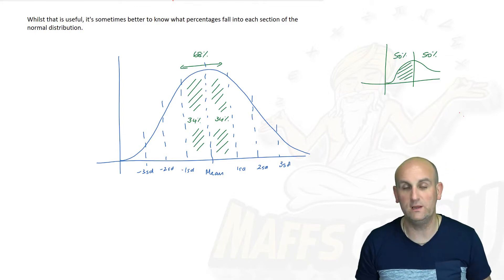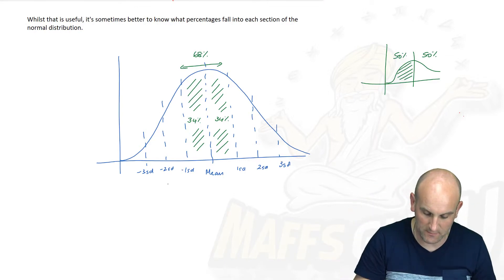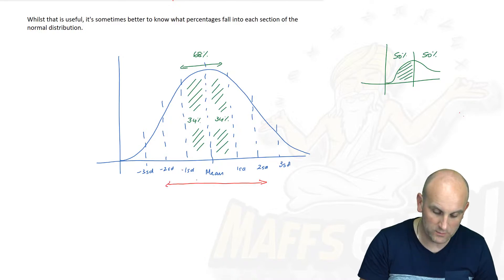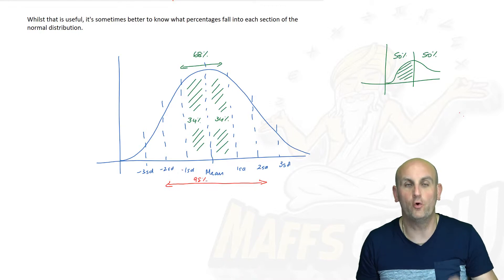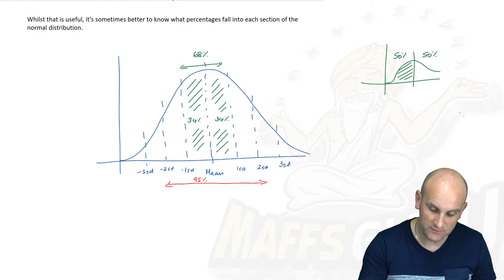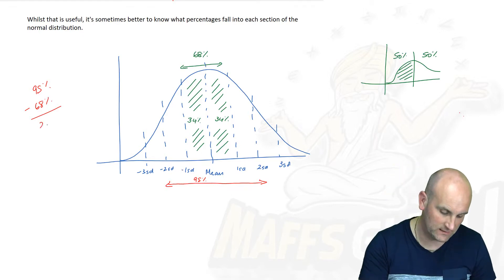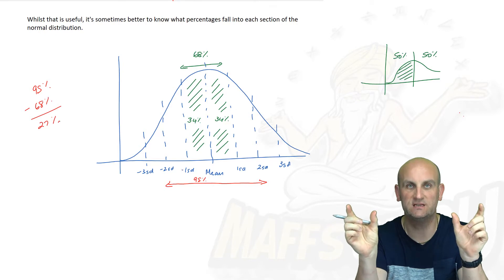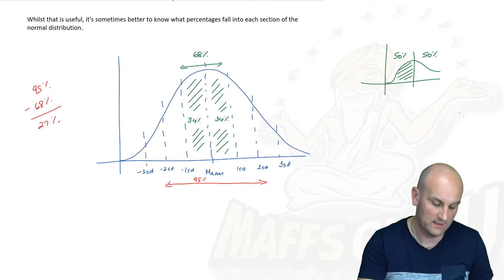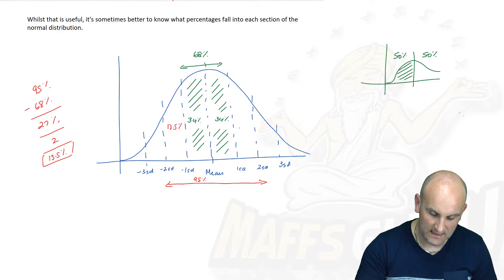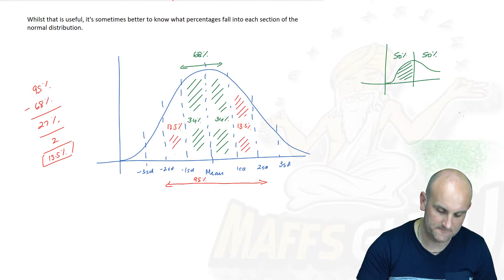Between two standard deviations we knew was 95%, but we've already taken out 68%. So if I do 95% minus 68%, that's 27%. Those next two sections have 27% shared between them. If I divide that by two, that gives me 13.5%. This section here is 13.5% and this section here is also 13.5%.